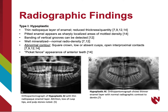In type 1, the enamel is reduced in thickness, appearing as a thin layer of radiopaque enamel with normal contrast to dentin. The pitted enamel seen in this type of AI shows up as sharply localized areas of mottled density radiographically. The tooth crowns appear square-shaped with lower absent cusps, and open interproximal contacts are commonly seen. A characteristic picket fence appearance of anterior teeth is also evident radiographically. The pantomographs displayed here show the thin, distinctive radiopaque layer of enamel, notably on the posterior teeth. The patient on the left also exhibits attrition, loss of cusp tips, and pulp stones in the molars.